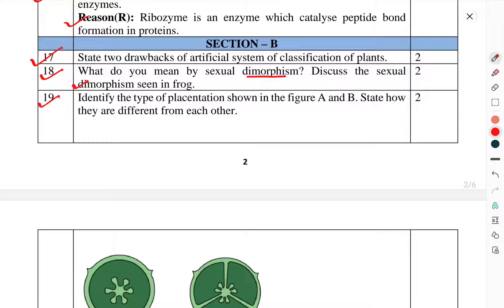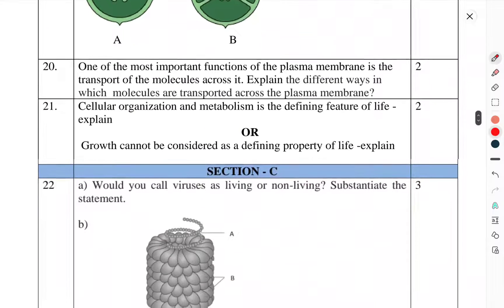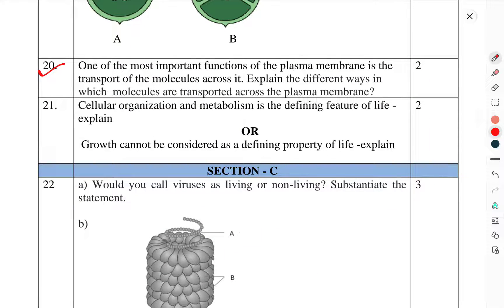Question 19: Identify the type of placentation shown in the figure A and B. State how they are different from each other. Question 20: One of the most important functions of the plasma membrane is the transport of molecules across it. Explain the different ways in which molecules are transported across the plasma membrane. Question 21: Cellular organization and metabolism is a defining feature of life. Explain. Or, growth can't be considered as a defining property of life. Explain.